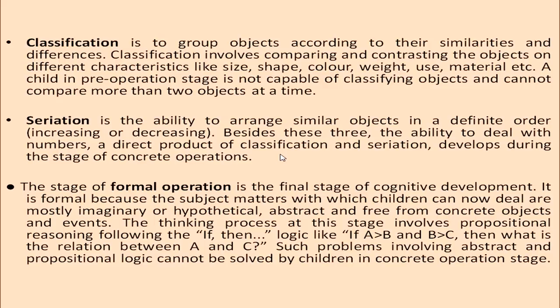The formal operation stage is the final stage of cognitive development. It is called formal because the subject matters children can now deal with are mostly imaginary, hypothetical or abstract and free from concrete objects. The thinking process involves propositional reasoning — for example, if A is greater than B and B is greater than C, what is the relationship between A and C? Children in formal operations can solve even complex problems and engage in hypothetical deductive reasoning, where they think of all possible solutions and deduce the best alternative by weighing the pros and cons.